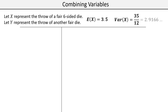Let the discrete random variable X represent the throw of a fair six-sided die. All of you can think of the probability distribution for that die. We need the sample space — all the possible outcomes: one, two, all the way through to six.